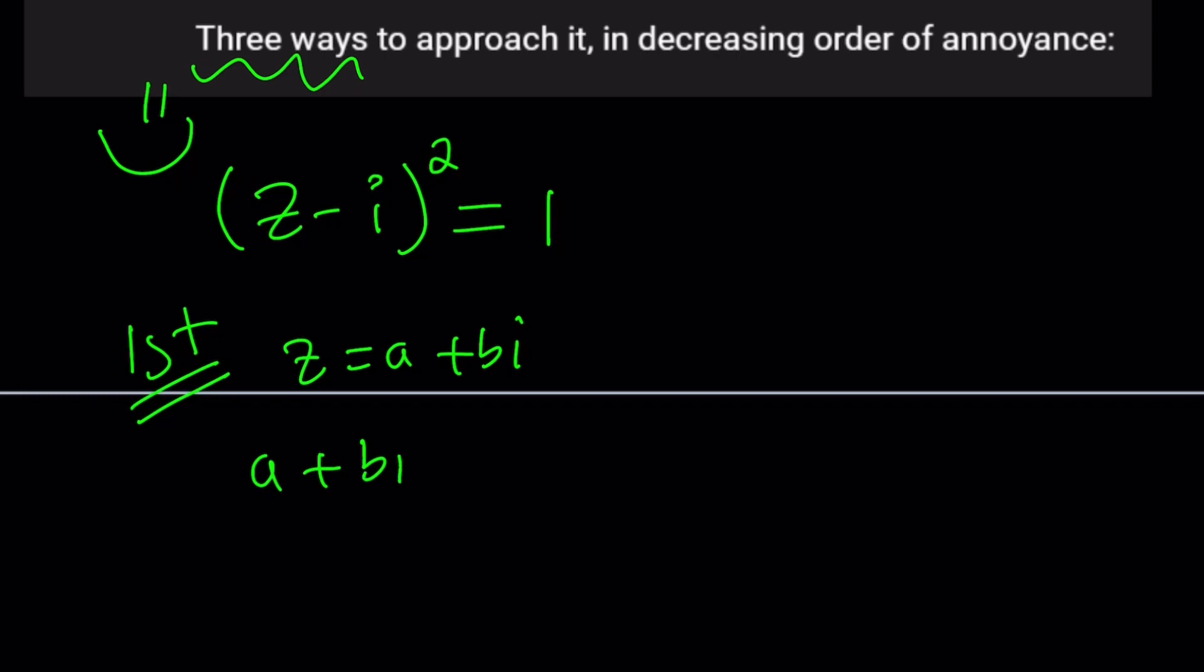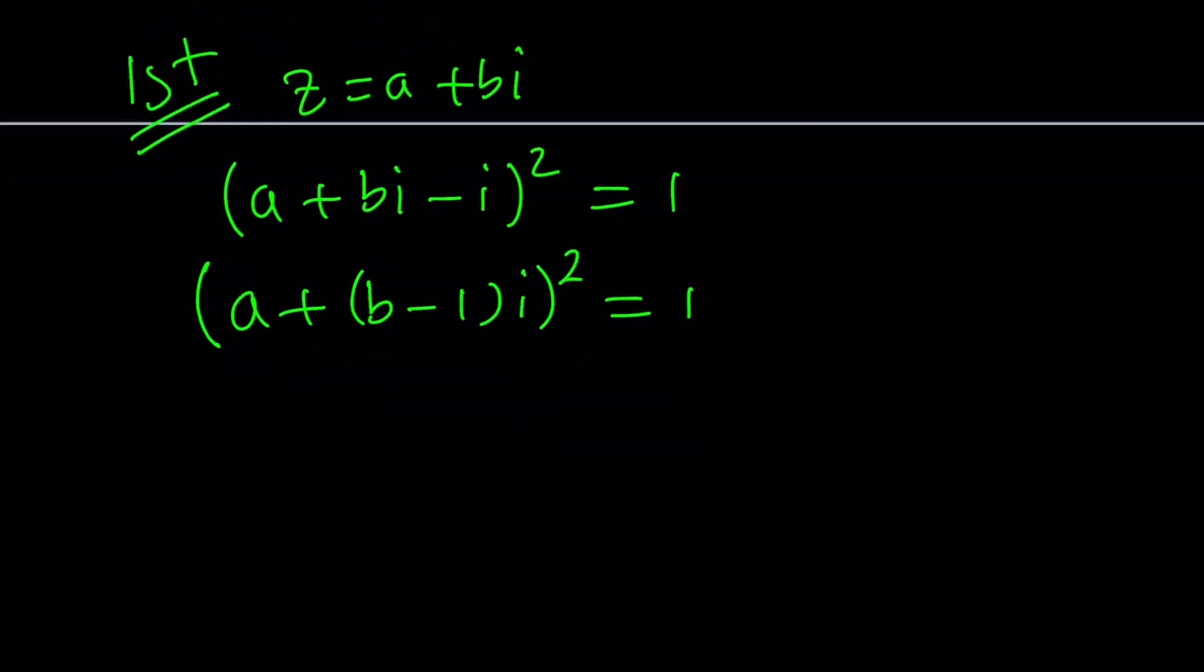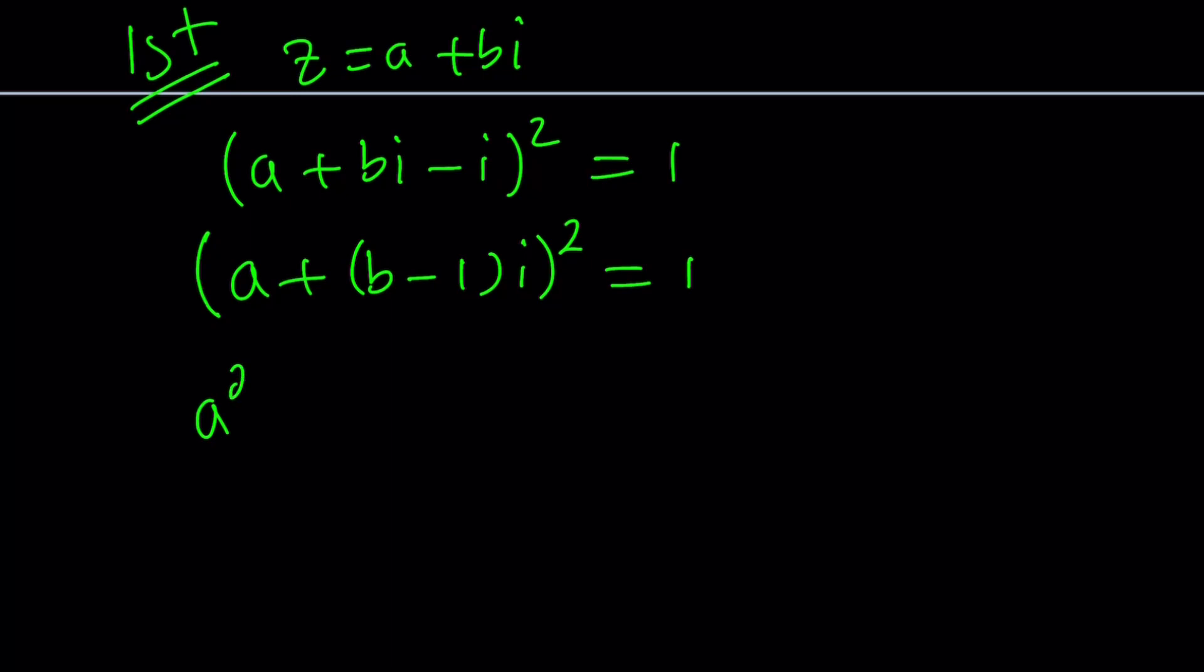(a + bi - i)² = 1. And then now bi and i can be combined. We can write this as (a + (b-1)i)². Let's go ahead and square this and set it equal to one. So it's going to be a² + 2a(b-1)i + (b-1)²i².